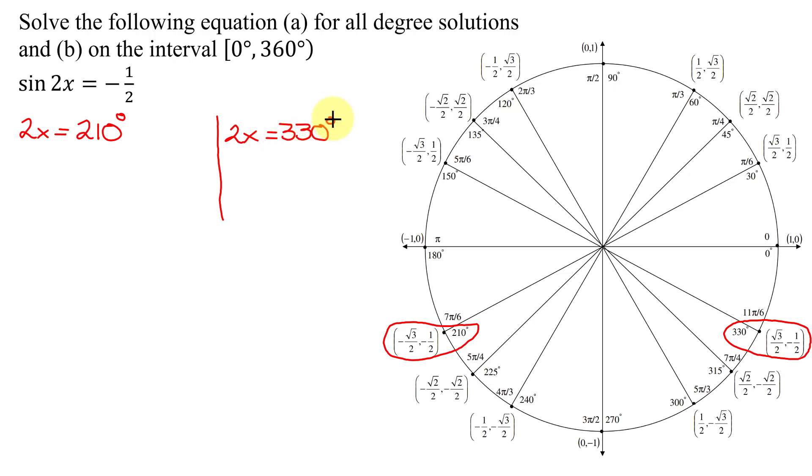Now, don't forget, in part A, I'm trying to find all degree solutions. Now, be careful. Some students divide by 2 before they try and find all solutions. It's very important. You need to find all coterminal angles for 210 before you divide by 2.